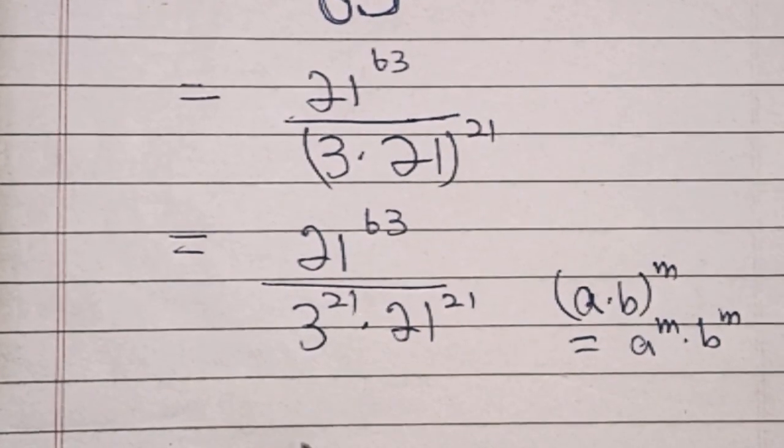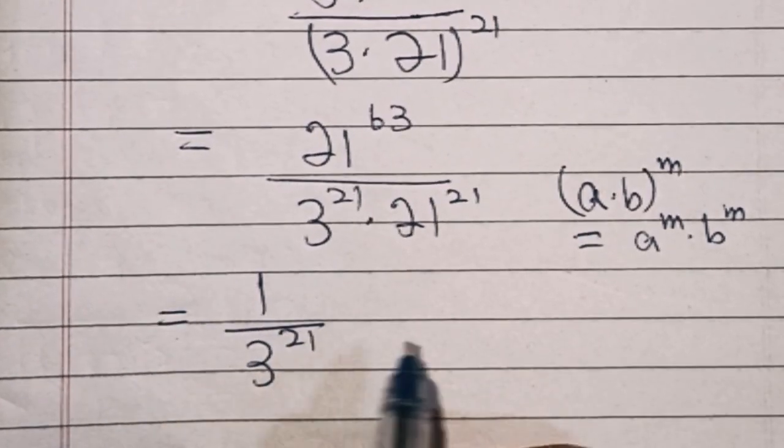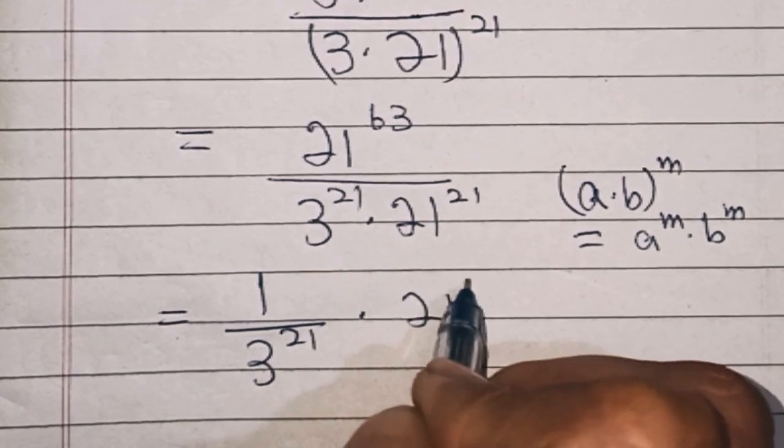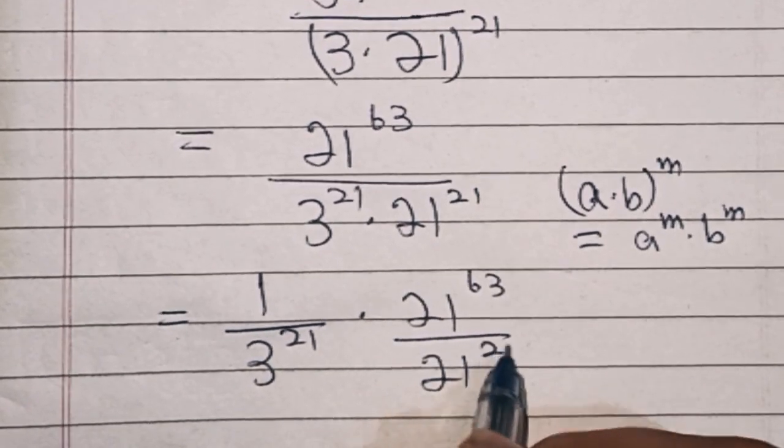In the next step we can write 1 over 3 power 21 times 21 power 63 over 21 power 21.